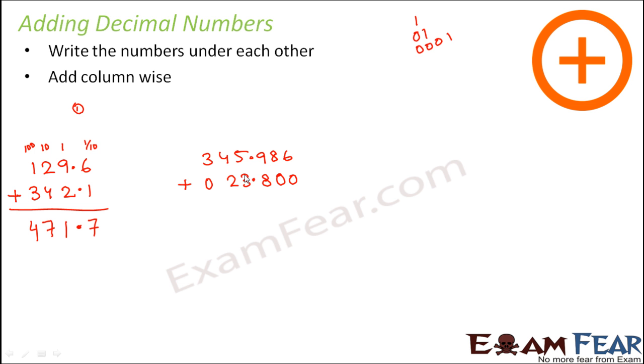This is how you have arranged such that the tenths place are together, under each other, the ones place are under each other, and so on. Then you add it column-wise: 6 plus 0 is 6, put a decimal point, 8 plus 8 is 16 so carry 1, 9 plus 3 is 12 plus 1 becomes 13 so write 3 carry 1, 5 plus 2 is 7 plus 1 is 8, 4 plus 0 is 4, 3 plus 0 is 3. So this is 438.786. Actually, let me correct that—9 plus 0 is 9, 8 plus 8 is 16 carry 1, 5 plus 3 is 8 plus 1 becomes 9, 4 plus 2 is 6, 3 plus 0 is 3. So this is 369.786.